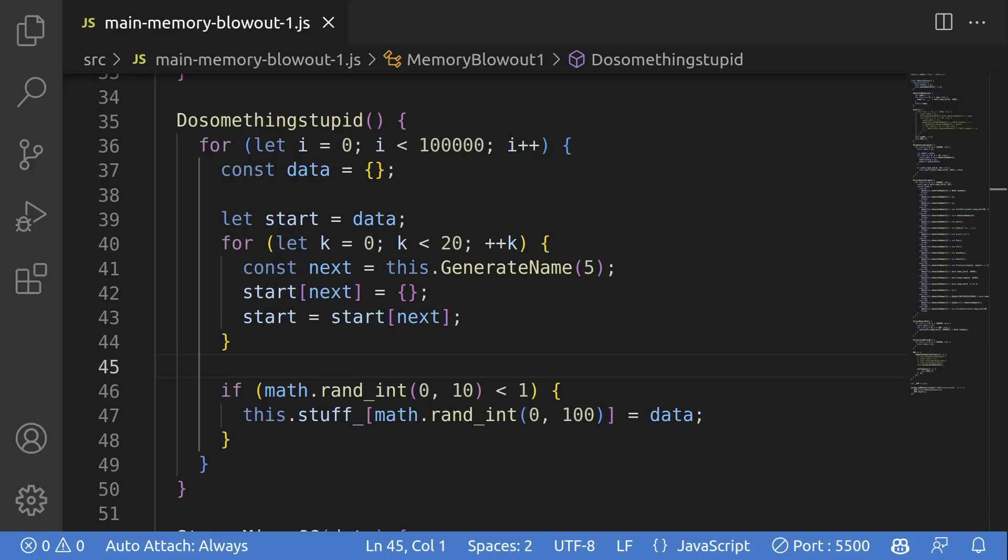So we can change this test around a tiny bit to try and poke the major GC into action. So what I've done here is I just take a random subset of the data and I stuff it into this.stuff, overriding whatever happened to be there. This.stuff is permanent, never deleted for the duration of the test. So this should in theory keep a bunch of random things for a lot longer than a single call of doSomethingStupid and promote things to the old generation.